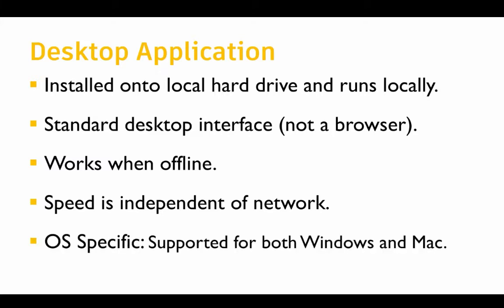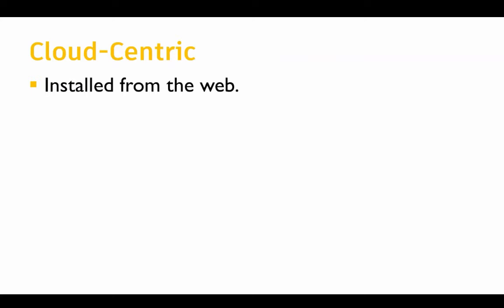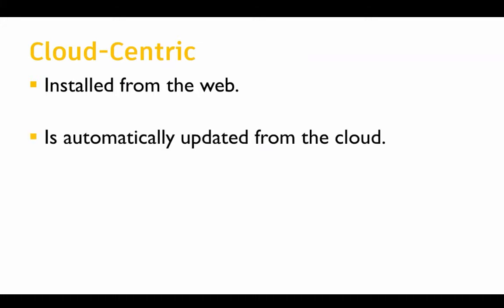There are two versions of Fusion — one for Windows and one for Mac. It's also cloud-centric: it's installed from the web and automatically updated from the cloud. So with inventor you always have to ask 'which version do you have?' — but with Fusion that's not really a question to ask because everybody has the latest version. When you start Fusion, it checks if it's up to date, and if it's not, it'll automatically pull the latest update.